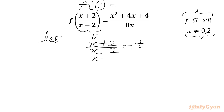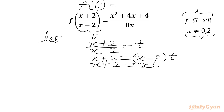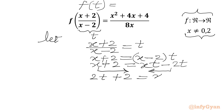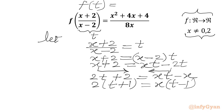Now we can cross multiply: x+2 = (x-2)·t, which gives x+2 = xt − 2t. Taking −2t to the LHS and x to the RHS gives 2t+2 = xt−x. Then 2(t+1) = x(t−1), so dividing both sides by (t−1) gives x = 2(t+1)/(t−1).